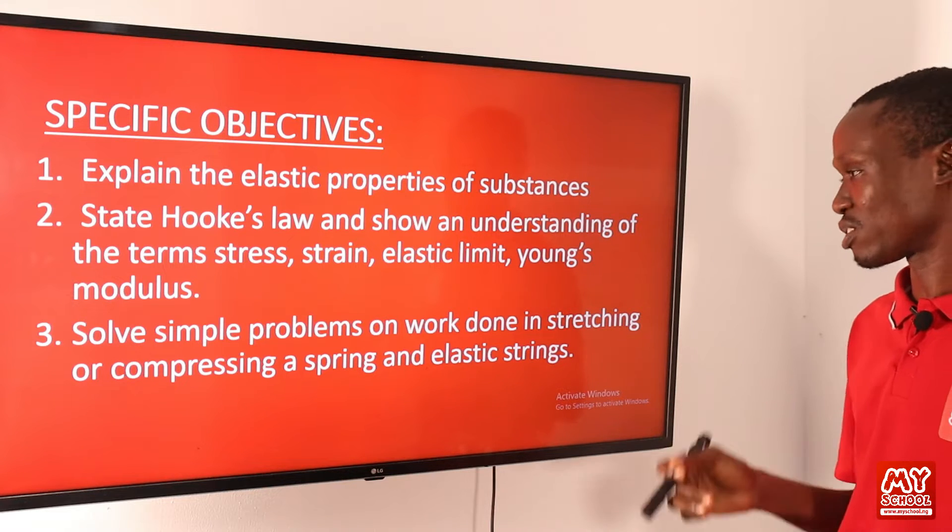So let's understand the meaning of deformation. Deformation occurs when a substance — in this case a wire — is stretched or compressed. Deformation can be elastic or plastic. Deformation is elastic if the wire returns to its original size and shape after the force is removed, while it is plastic if it does not return to its original shape and size. An elastic material is one that regains its original shape and size after the force that caused the deformation is removed.